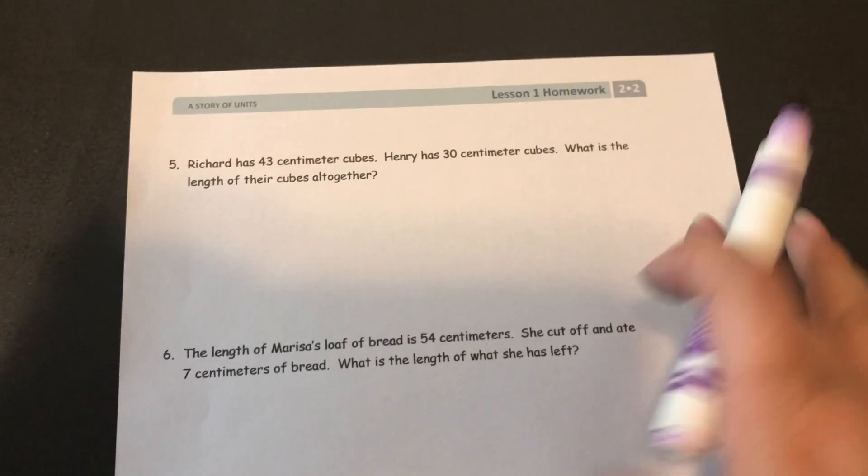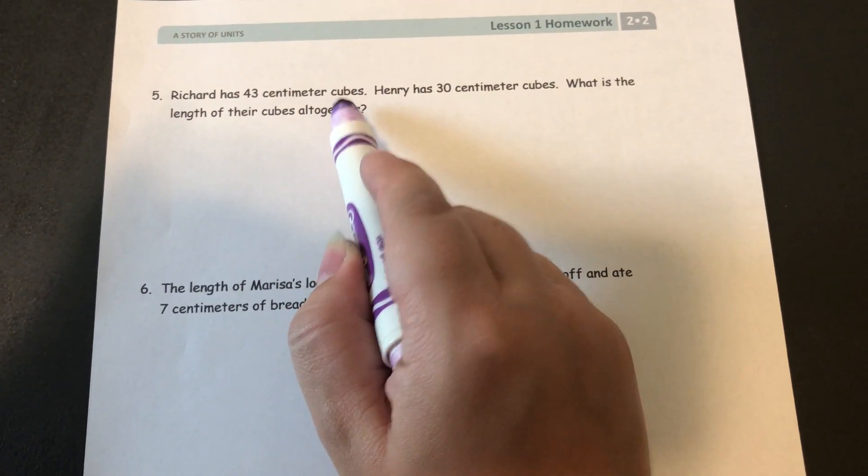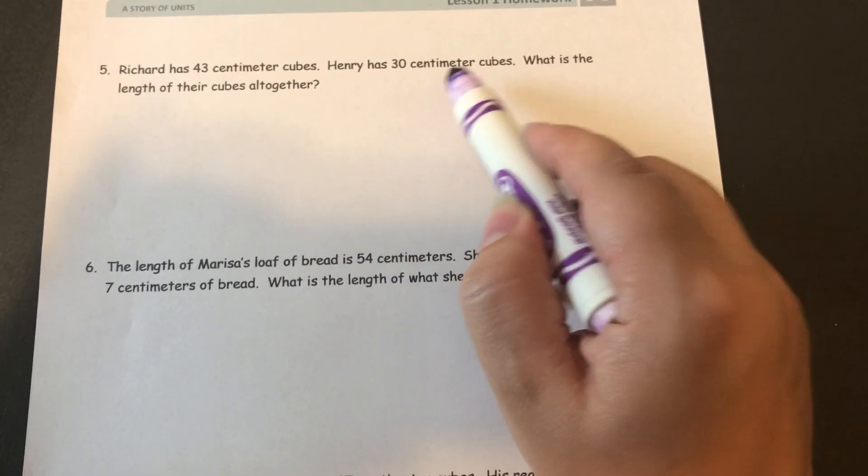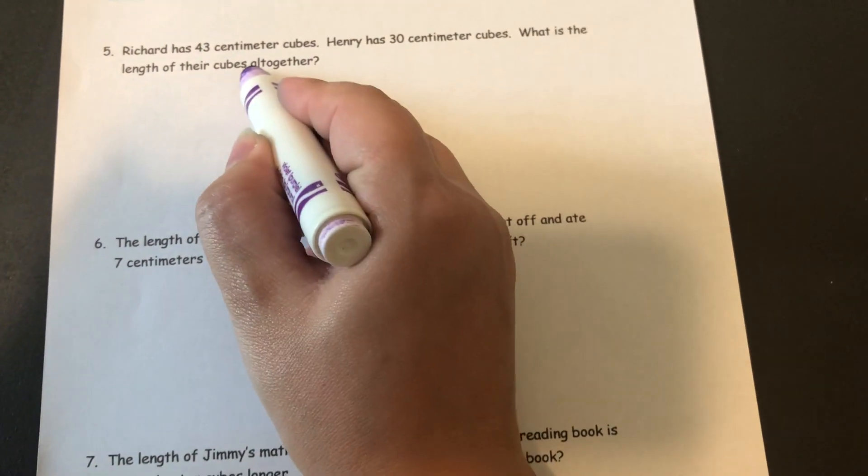Alright, looking at the second page, it is three word problems. The first one says Richard has 43 centimeter cubes. Henry has 30 centimeter cubes. What is the length of their cubes all together?